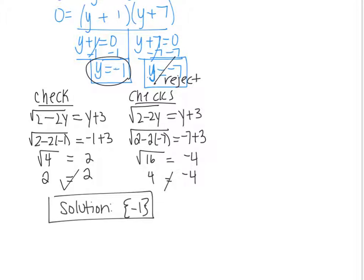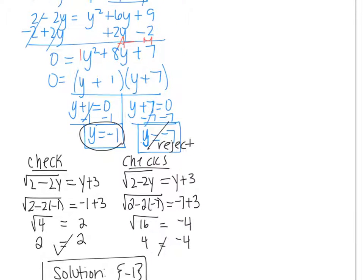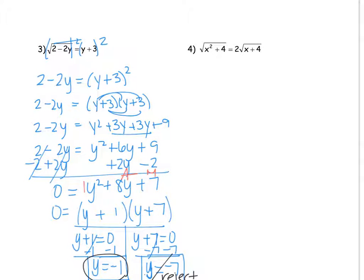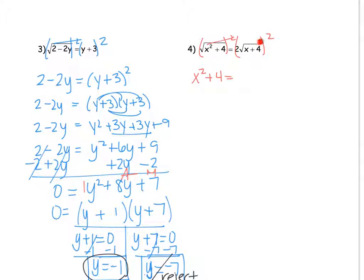Let's look at the last example. This example is very unique because there are two radicals — one on each side. If you look at those steps from the beginning, we always have to isolate one of the radicals. It looks like one is isolated, but the other has a 2 in front. You're never going to be able to isolate them both at the same time, so we can go straight to squaring both sides.